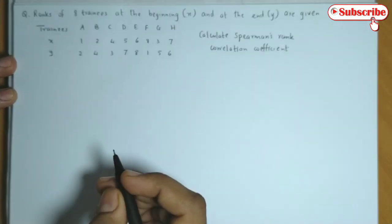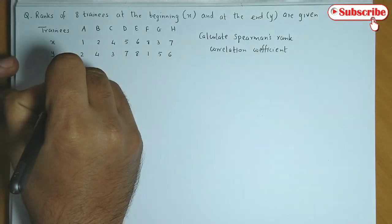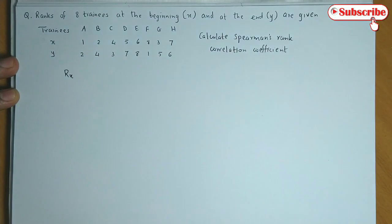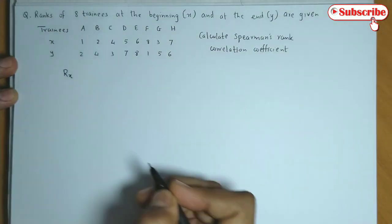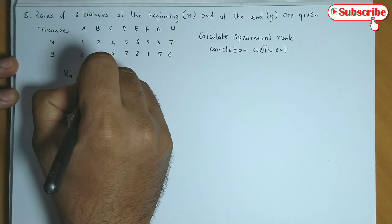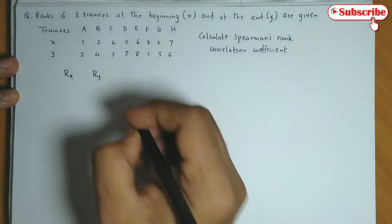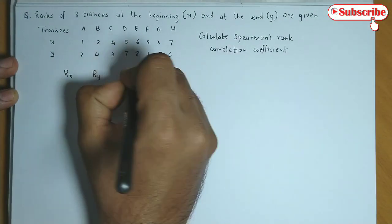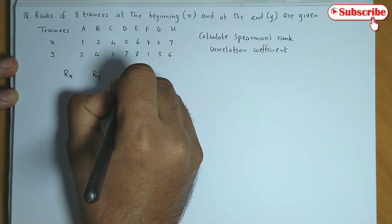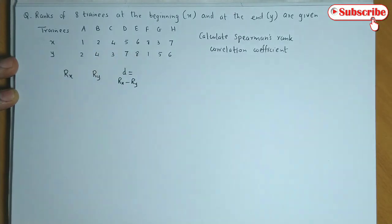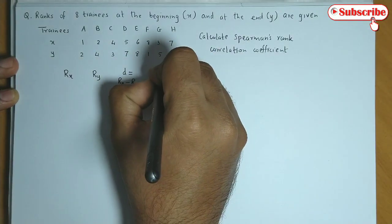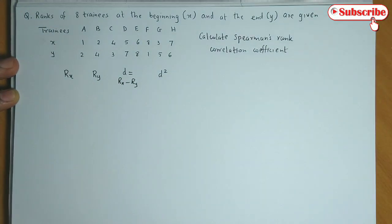So let us proceed. First we write rank x, we denote it as Rx. Then the end rank is Ry. Then the difference between the ranks, that is Rx minus Ry. And the last one is square, that is d square.